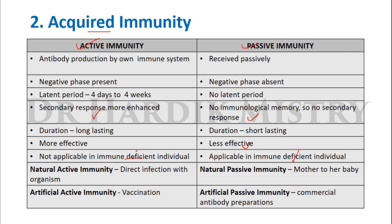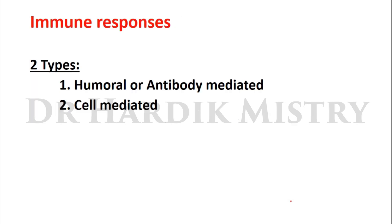There are two types of both active and passive immunity: natural and artificial. Natural active immunity — the example is direct infection with the organism. Artificial active immunity — through vaccination. Natural passive immunity — from mother to her baby. Artificial passive immunity — these are commercial antibody preparations directly given to patients. For example, in severe COVID infections, antibodies were directly given to patients, which comes under artificial passive immunity.